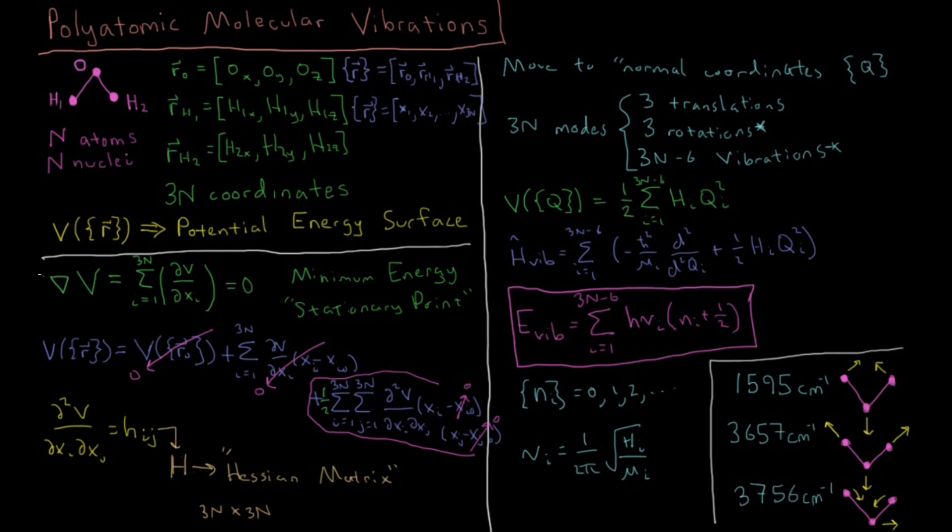So for water, n is 3, so 3n-6 is 3. And the three vibrational frequencies you get for water are 1595 wavenumbers, 3657 wavenumbers, 3756 wavenumbers. And the three normal modes are the familiar: there is a symmetric stretch where the hydrogens stretch out together. There is an asymmetric stretch where one of these should be going out and the other going in. And the bending mode, where the hydrogens kind of rock in and form this scissor motion back and forth.